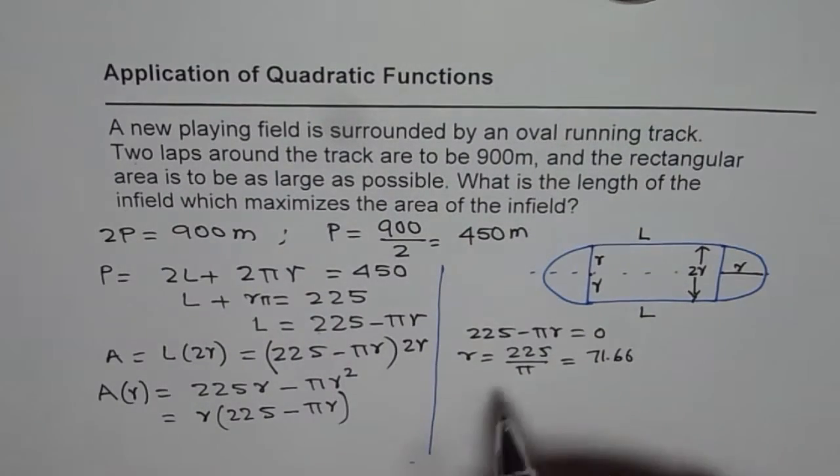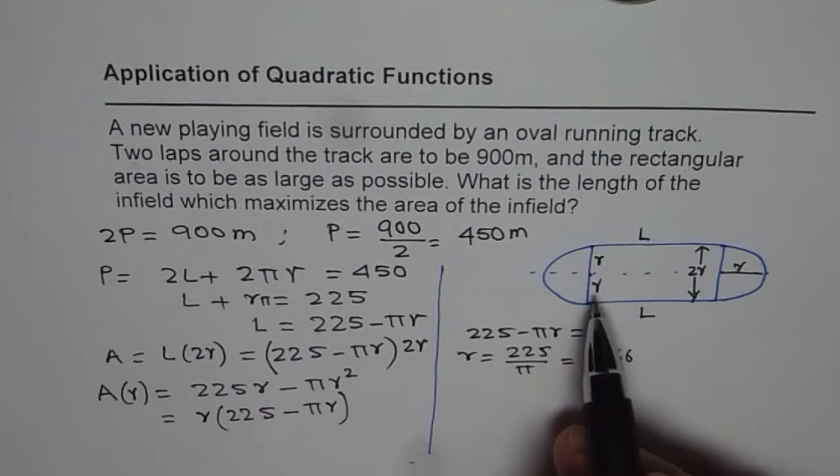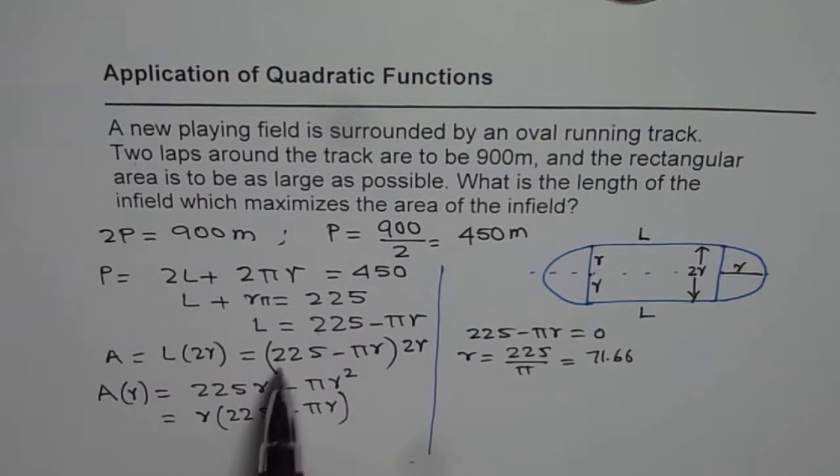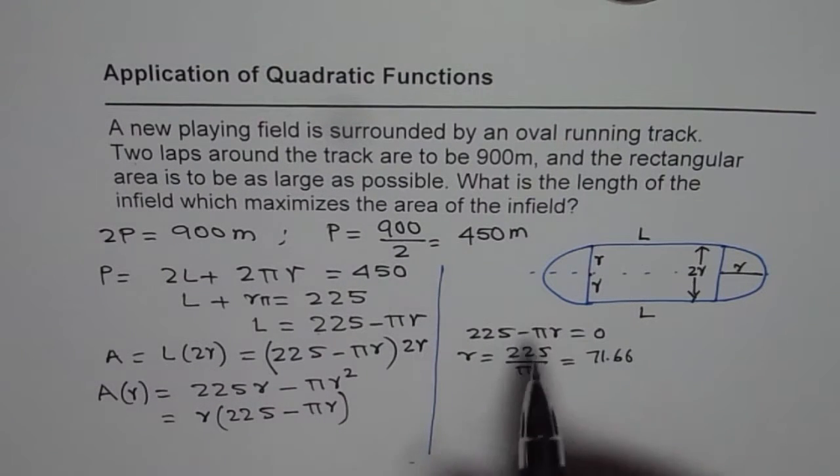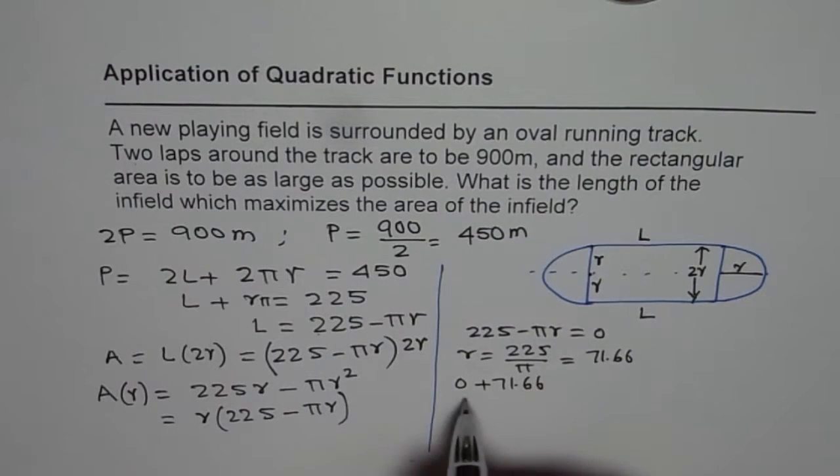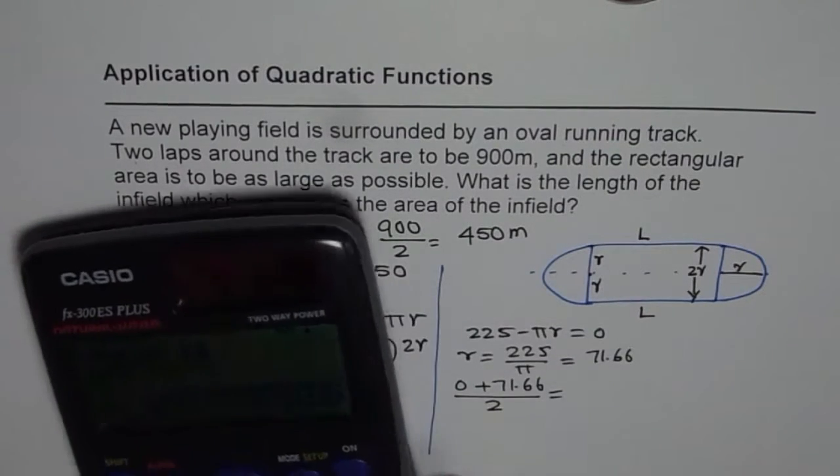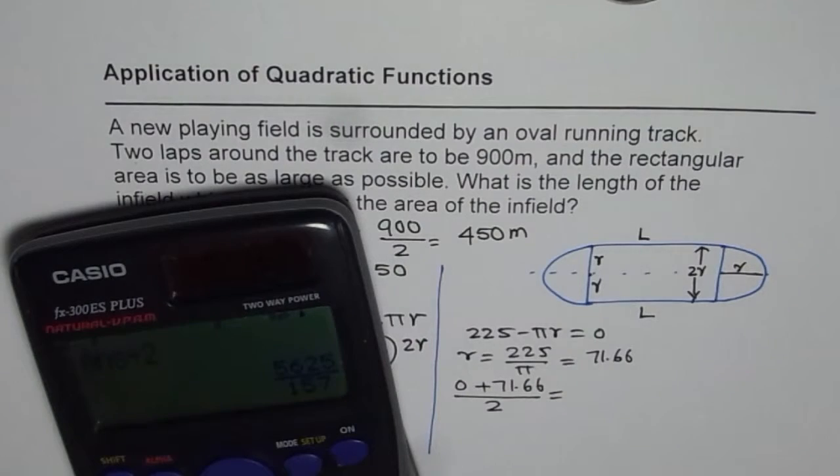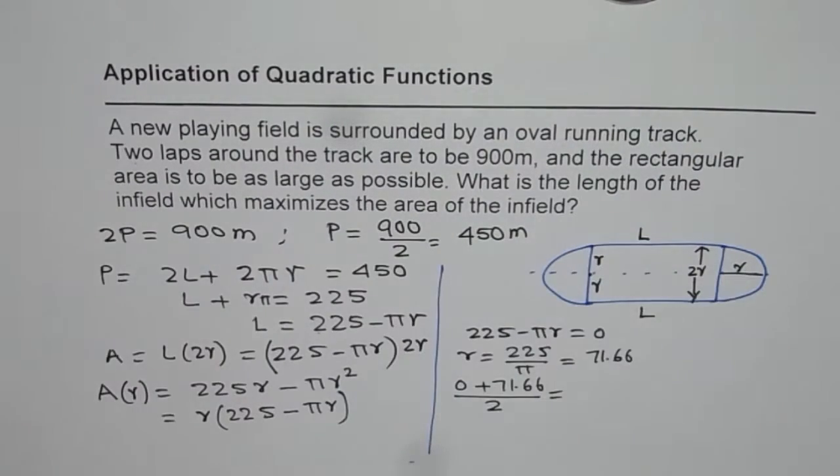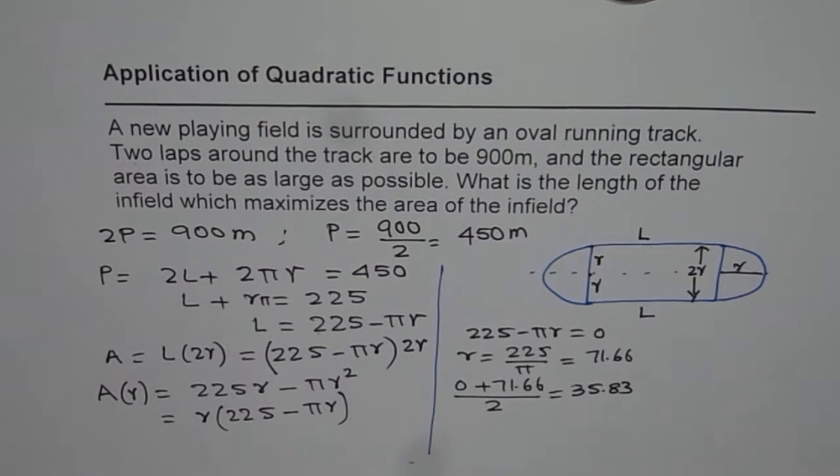So now the center of these two zeros is the required value of R which can give us the maximum value for this area. So the center value will be 0 plus 71.66 divided by 2. That gives us, let's divide this by 2 as equal to 35.83 approximately.